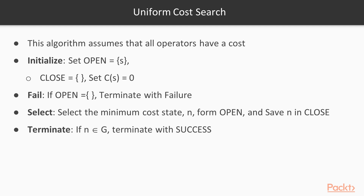So let's say I have this algorithm. I initialize it, and what I do is I create a data structure called 'open' and I put my start state S into it. I create one more data structure called 'close' which is empty. I'll be taking states out from open and putting them in close. I set the cost of the initial start state as zero, since the cost of traveling from start state to start state is zero.